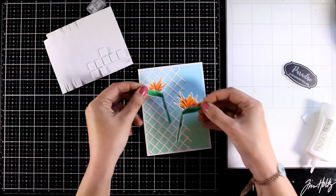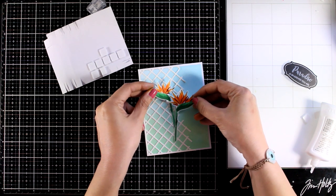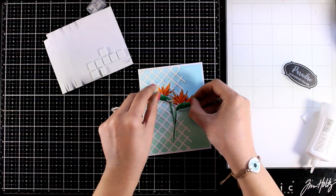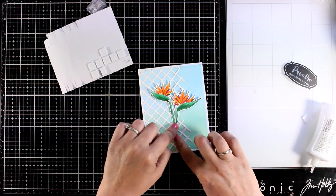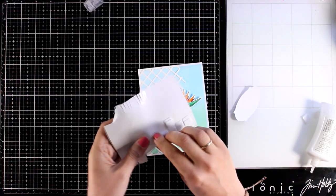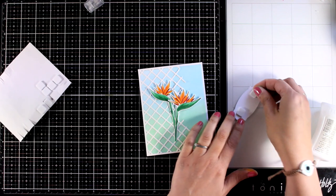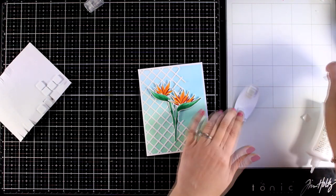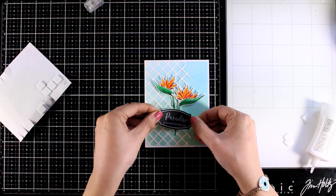So I will try and arrange them nicely on top of my card. Always make sure that they are not at the same height otherwise it doesn't look very interesting. And then at the back of the label I'm going to add some foam squares and pop it on top of my flower composition.